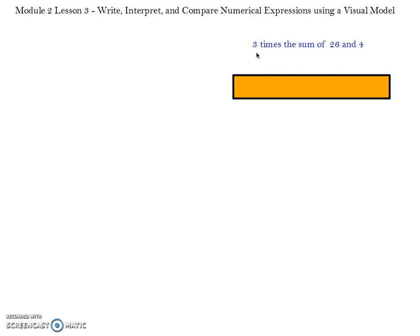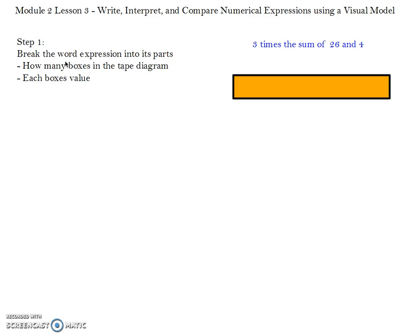The numerical expression that we're working with today is 3 times the sum of 26 and 4. The first step when solving this expression is that you want to break the word expression into its parts. Basically, what you're looking for is how many boxes are in the tape diagram and each box's value. Start with the box's value — you want to look for the sum or the difference of two numbers. That's going to be the value of each box.